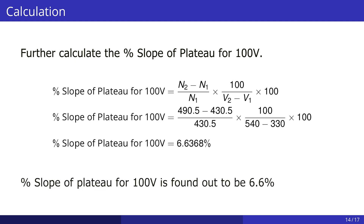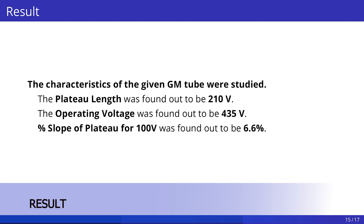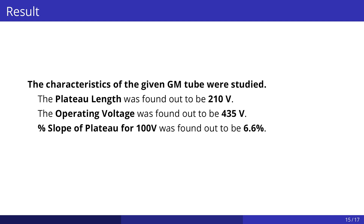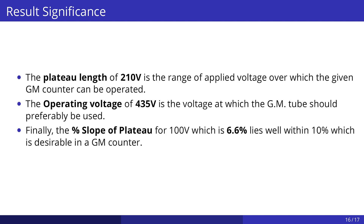By calculating, we have found the percentage slope of the plateau for 100 volts to be 6.6%. The significance of our result is that the plateau length of 210 volts is the range of applied voltage over which the given GM counter can be operated. The operating voltage of 435 volts is the voltage at which the given GM counter should preferably be used. Finally, the percentage slope of the plateau for 100 volts — which is 6.6% for the given GM counter — lies well within 10%, which is desirable in a GM counter.